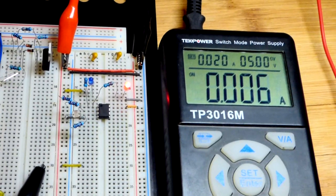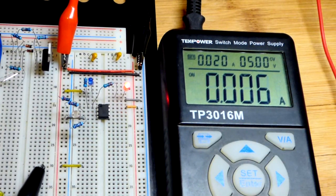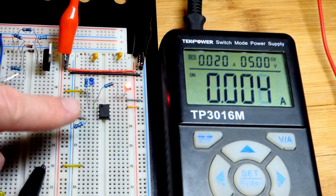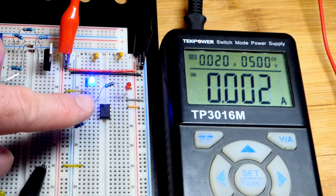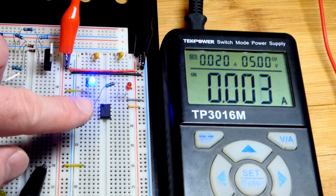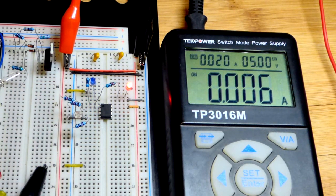You can see we got 5 volts there. About 6 milliamps for the red LED, approximately. And about 2 milliamps for the blue LED, approximately. They're about the same brightness.